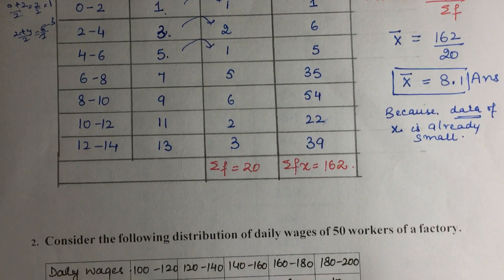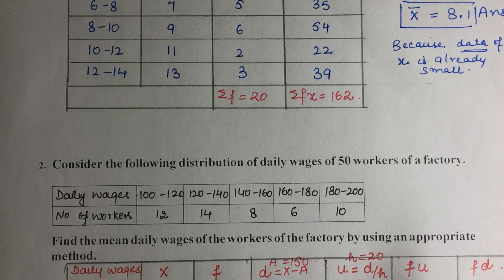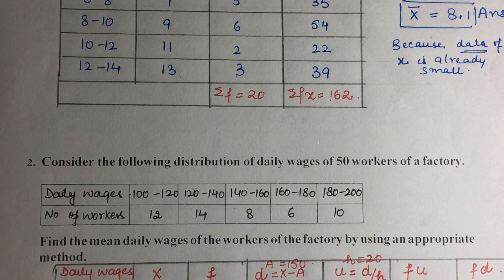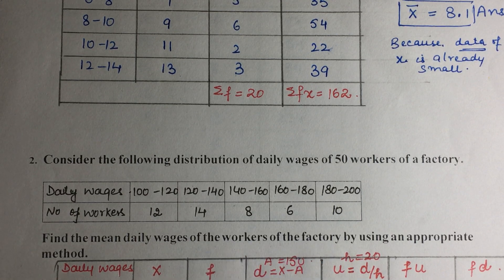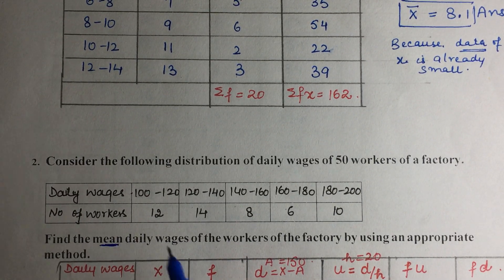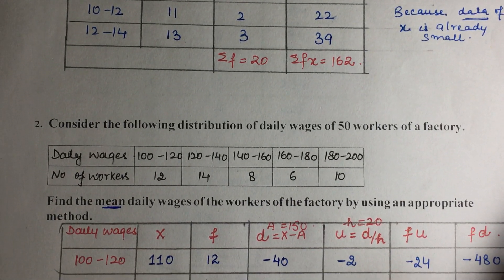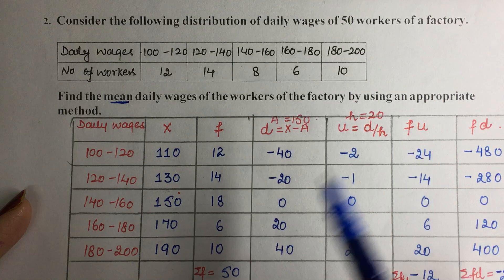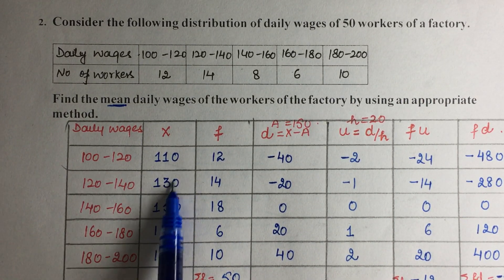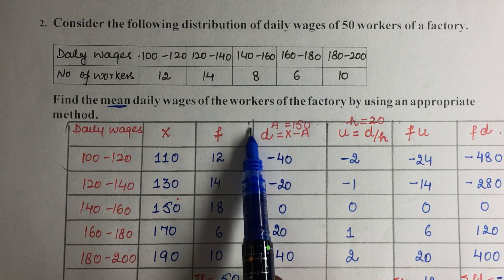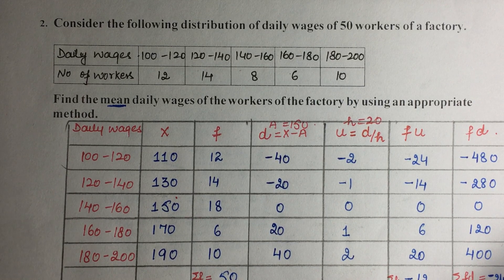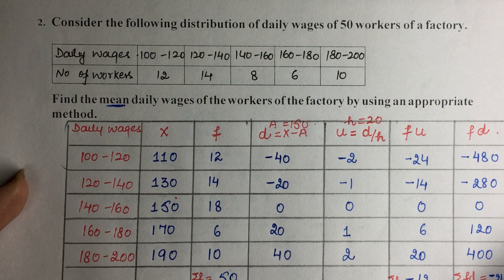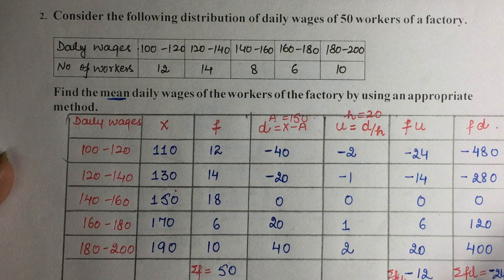Moving on to Question 2. Consider the following distribution of daily wages of 50 workers. We need to find the mean wages of the workers in the factory. Step one: find class marks. For example, 100 plus 120 over 2 gives 110. The class marks are 110, 130, 150, 170 — these are bulk/large values, so you should use the Assumed Mean Method or Step Deviation Method.